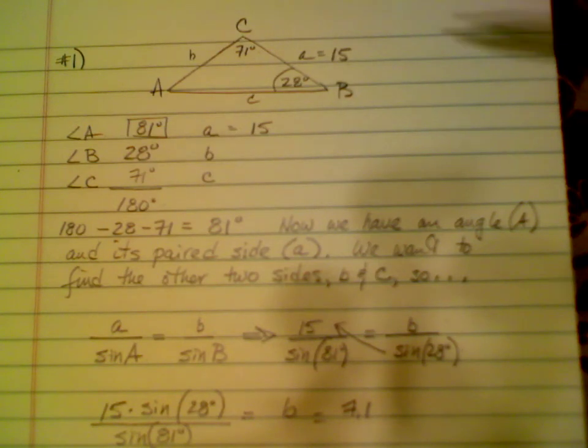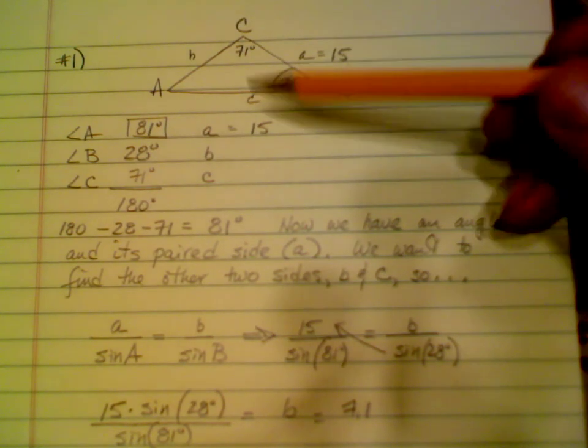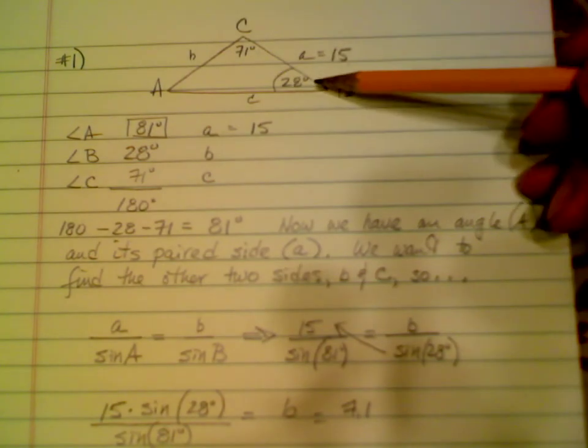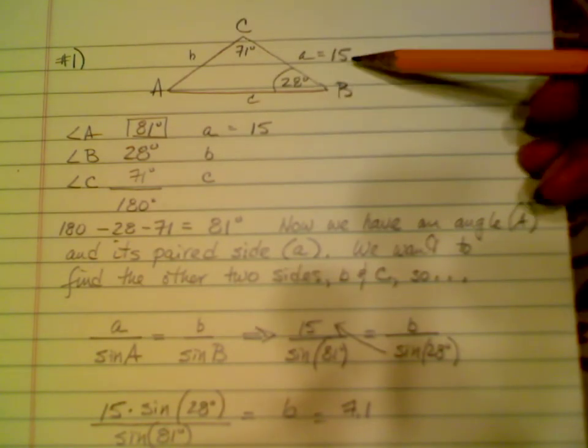Okay, this is the worksheet to solve problem number one. We're given angle C of 71 degrees, angle B at 28 degrees, and side A at 15.